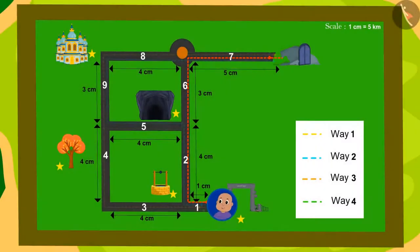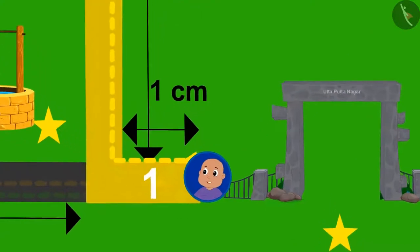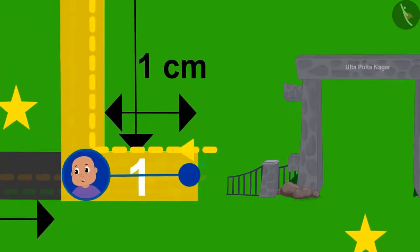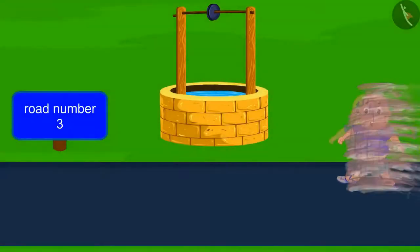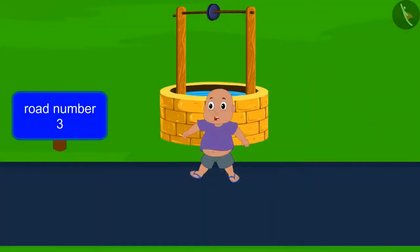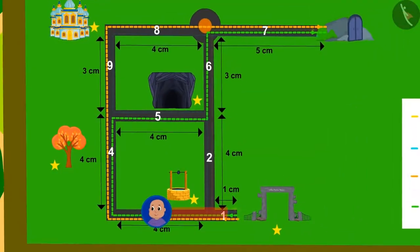Bablu was going towards the shortest path mentioned by us when suddenly he was pulled towards road number 3 towards the magical well.